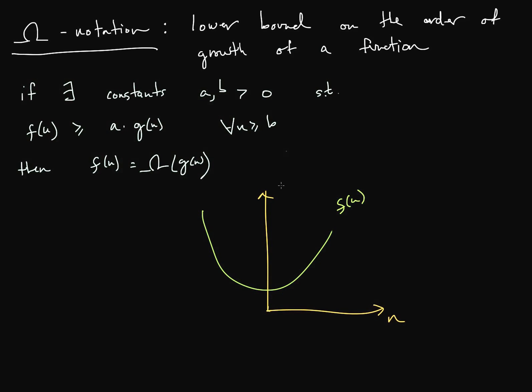And here is g of n. Actually, let's show a better one like this. Here's a times g of n, and our constant b. As you can see, a times g of n is a lower bound on f of n from b onwards, from this point b onwards.